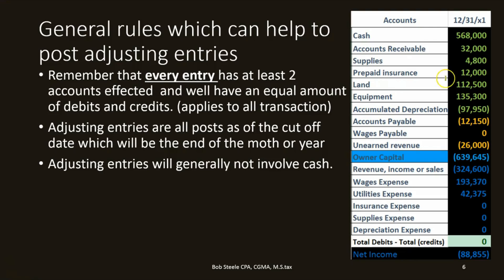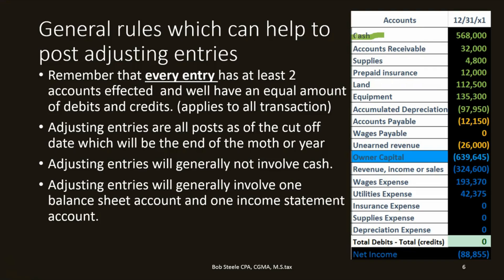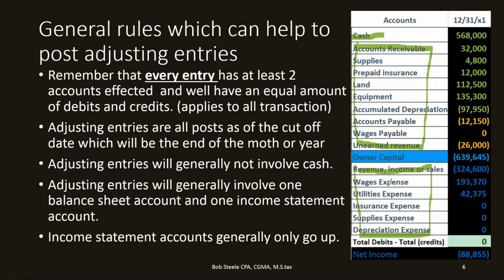Adjusting entries will generally not involve cash. Unlike the transactions process where cash is involved frequently, the adjusting process is generally not going to involve cash — cash is taken care of in the accounting department throughout the time period. Adjusting entries will generally involve one balance sheet account and one income statement account. If you're in the adjusting process, you'll have one balance sheet account and one income statement account. Income statement accounts generally only go up — revenue only goes up, expenses only go up — so you can figure out the direction of the adjustment before fully understanding the details.